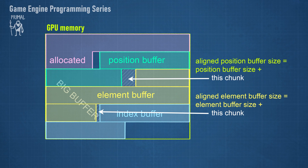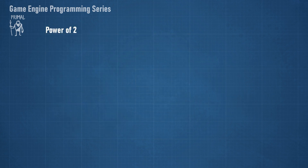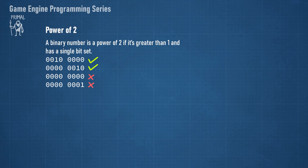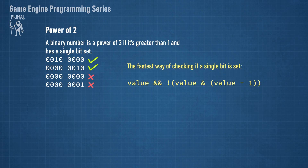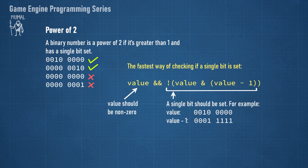The position buffer will be aligned automatically, since it has the same start address as the buffer resource. Buffer resources in D3D12 are created with 64KB alignment, which makes them also aligned to any smaller number that's a power of 2. Checking if an integer is a power of 2 is pretty simple — binary numbers greater than 1 have a single bit set if they are a power of 2. The fastest way to check this is to subtract 1 from the number and then logically AND it with the original value.